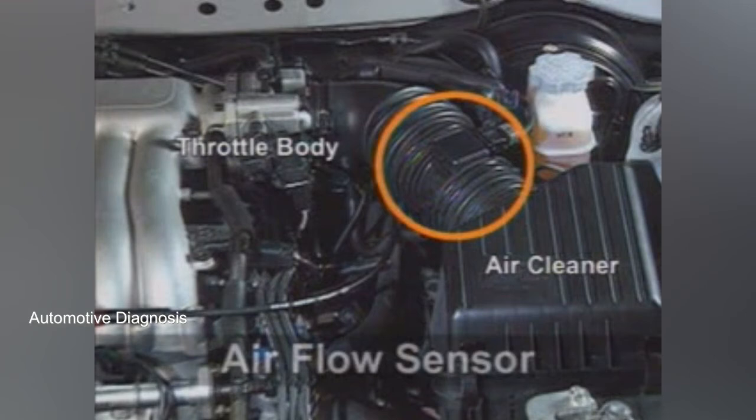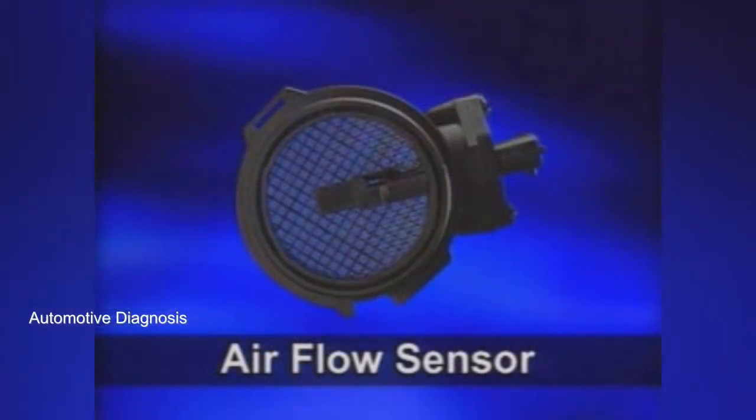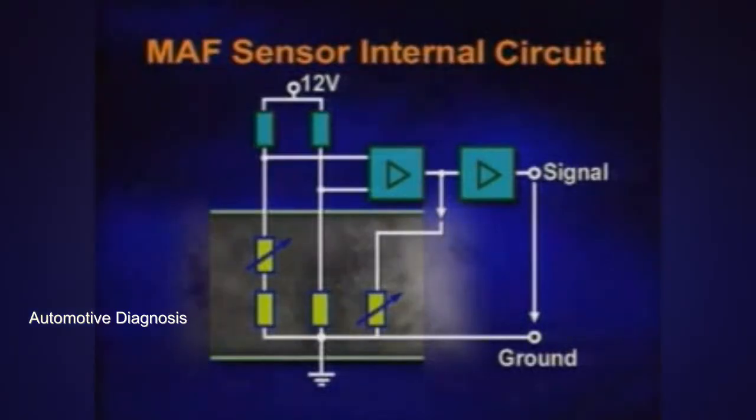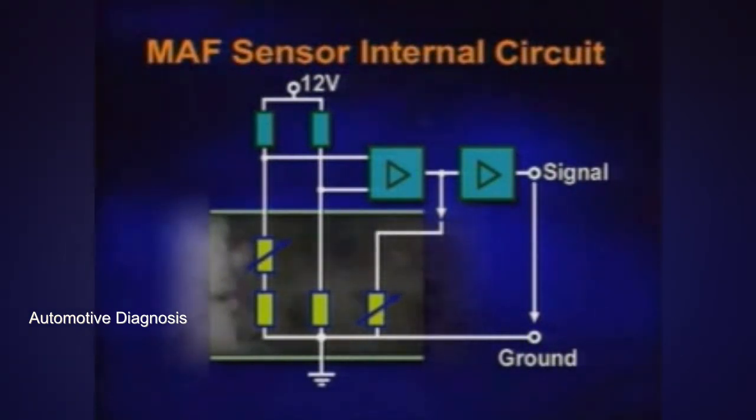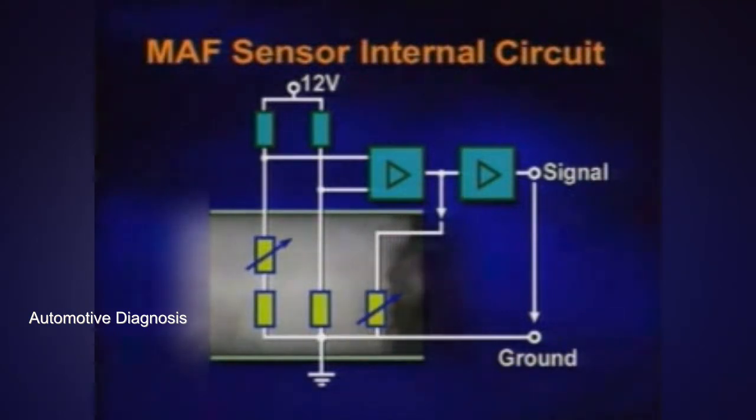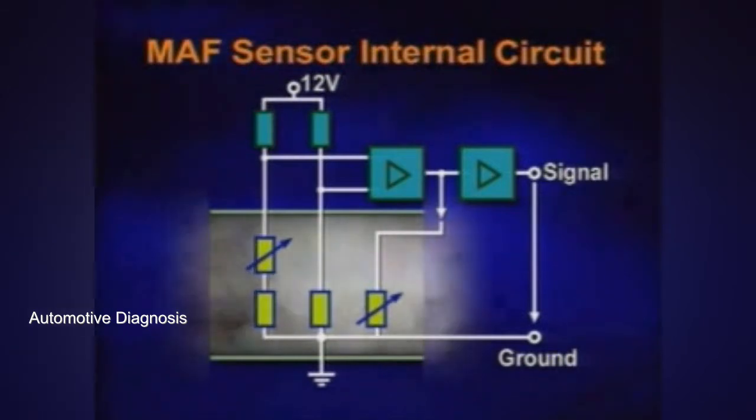The Mass Airflow Sensor is installed between the air cleaner and the throttle body. The Mass Airflow Sensor measures the amount of intake air by the cooling effect of hot film. The cooling effect varies depending on the airflow changes which cause voltage changes.